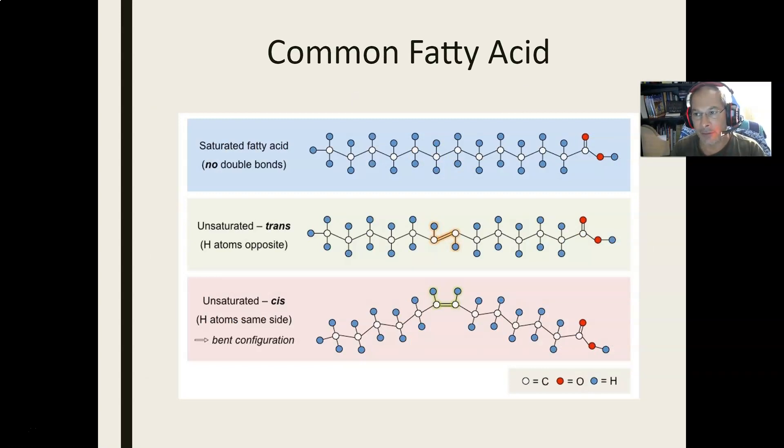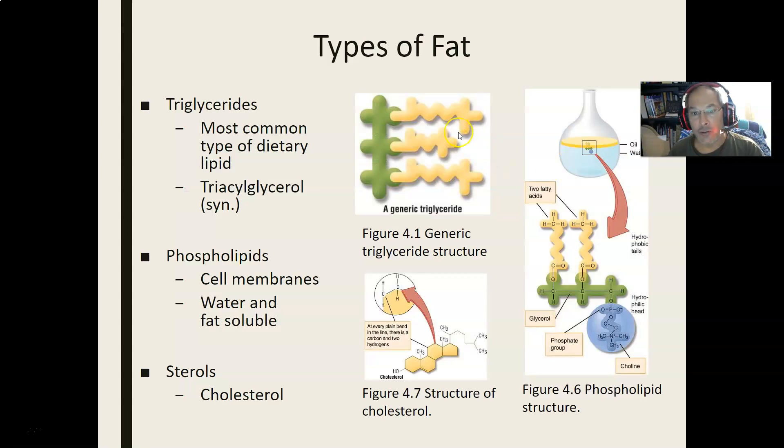One of those long pearl necklaces would be called a fatty acid. I just added this to the slide set. I love it. I found it on Google. So this would be a pearl necklace. These are carbon, and then the blue dots are hydrogen. And then if you have three of these together and they're kind of capped, that's a common fat that we eat. We call that triglyceride.